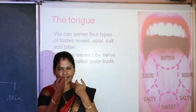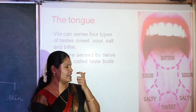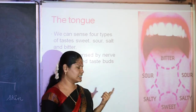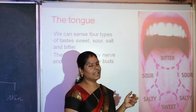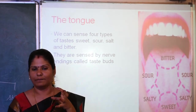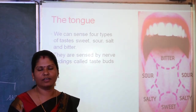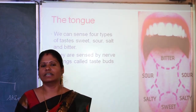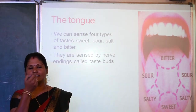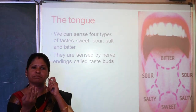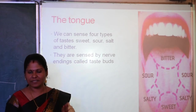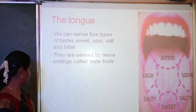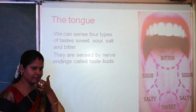Taste buds start from sweet at the tip, then salty, then sour, and bitter at the back. We cannot feel any taste at the center of our tongue. If you open your mouth and look in the mirror, you will see small buds on your tongue — those are called taste buds. The taste buds are sensitive nerve endings that help us differentiate between the four types of taste: sweet, salty, sour, and bitter.